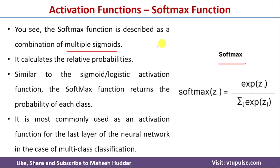The softmax activation function is commonly used in the last layer of a neural network when solving a multi-class classification problem. For a two-class classification problem softmax is not necessary, but for multi-class classification it plays a very important role.